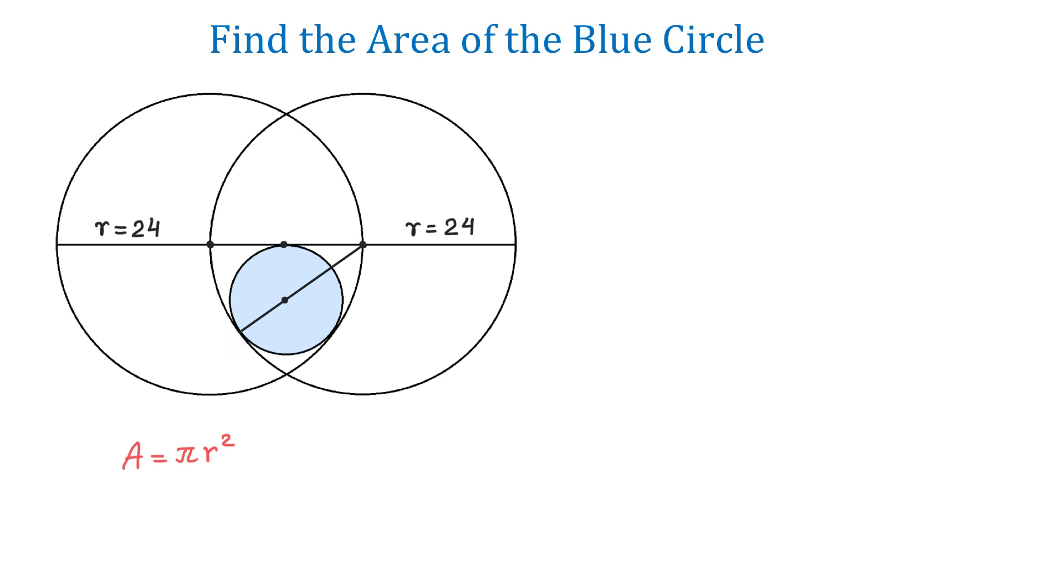Now, let the radius of the blue circle be x units. Then, if the radius of the big circle is 24 units, then the distance between the centers of these two circles will be 24 minus x.